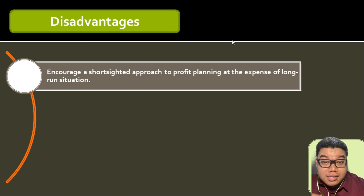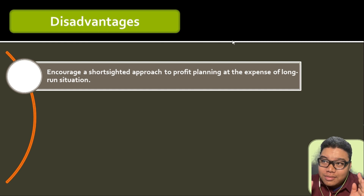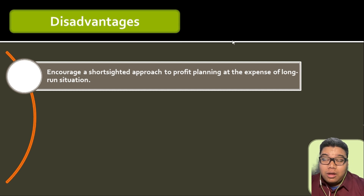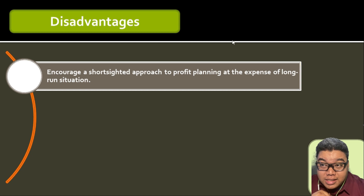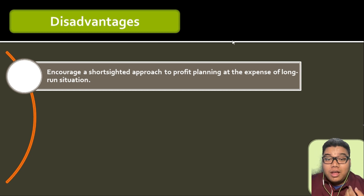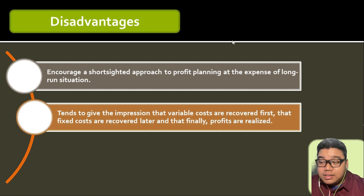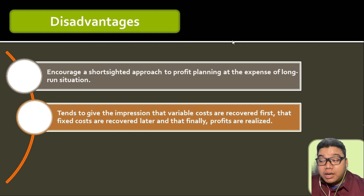Variable costing lets us see how each unit sold contributes to the recovery of fixed costs and subsequently to earning profit. However, the vision of recovering fixed costs first before earning profit is a very short-sighted approach to managing our business. As long as we recover fixed expenses we are earning profit, but that is not our ultimate long-run goal.